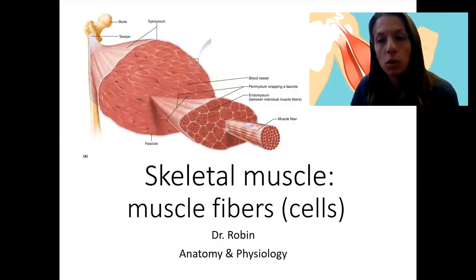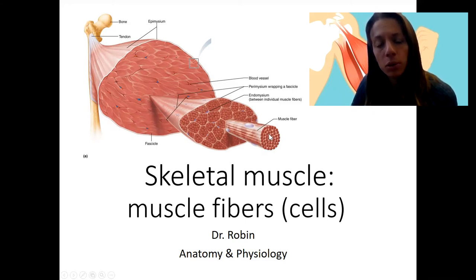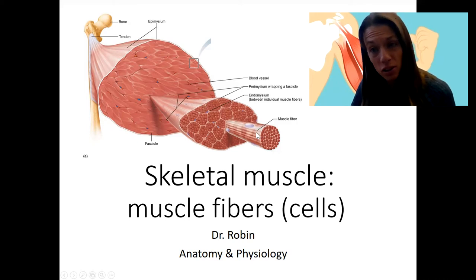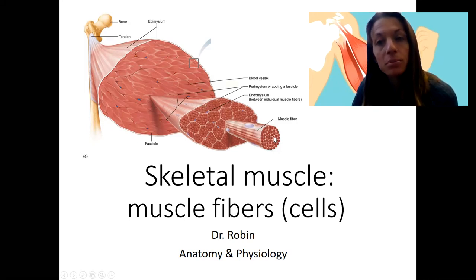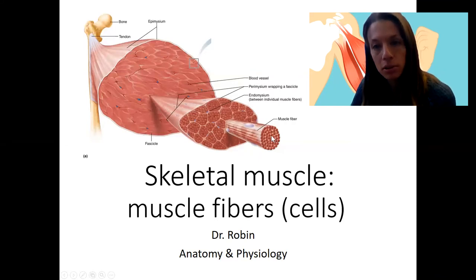So we just talked about levels of organization from the entire muscle organ, which is made up of these fascicles. This is one fascicle here that is composed of many muscle fibers, which are long muscle cells. So now we're going to zoom into this guy right here, this long muscle fiber, which you can already see some characteristics of. It's really long and it's full of protein fibers, full of myofibrils, which are made up of myofilaments.